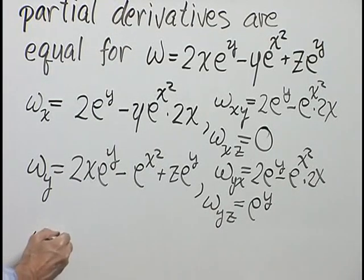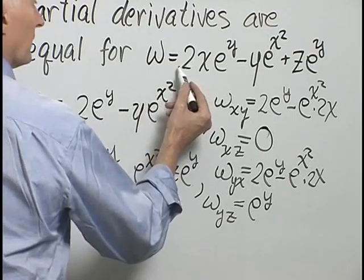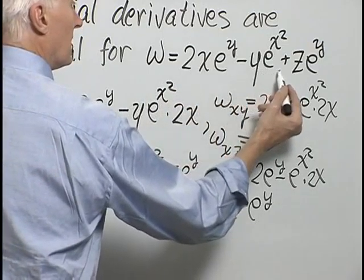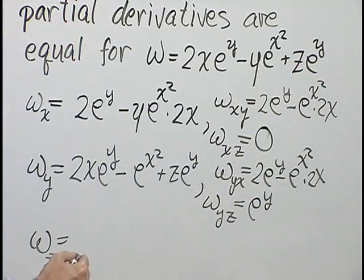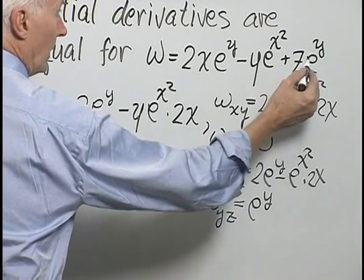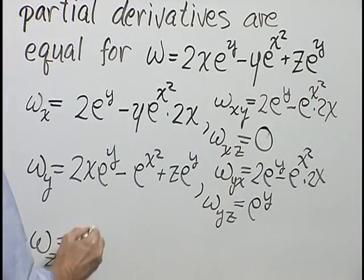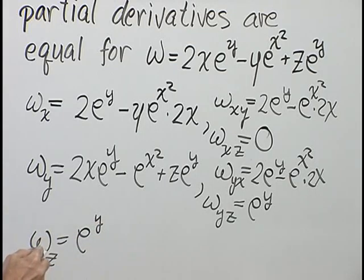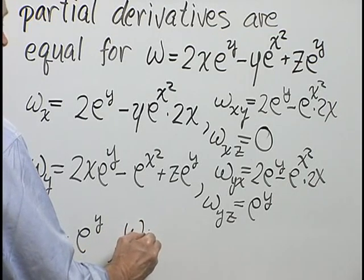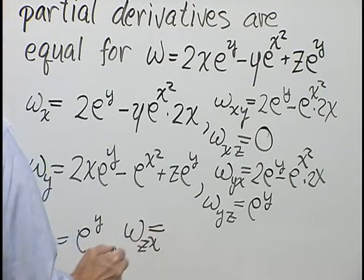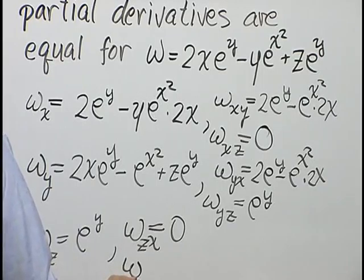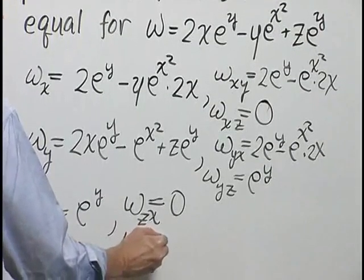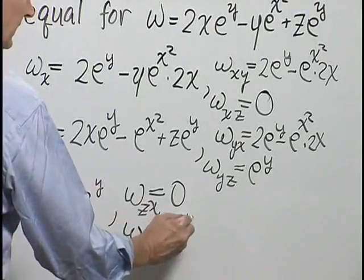Finally, let's differentiate with respect to z. The first two terms of w have no z; the last term is ze^y. Since e^y is constant, the derivative of z with respect to z is 1, so ∂w/∂z = e^y. Therefore w sub zx is zero (no x in e^y), and w sub zy is the derivative of e^y with respect to y, which is e^y.